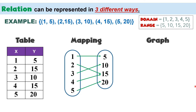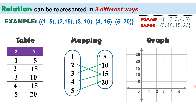The third way is using a graph. The horizontal line is the x-axis and the vertical line is the y-axis. The first ordered pair is (1,5): 1 on the x-axis and 5 on the y-axis — let us connect them and plot the point here. Next, (2,15): 2 from the x-axis and 15 from the y-axis — let us connect and plot the point here.